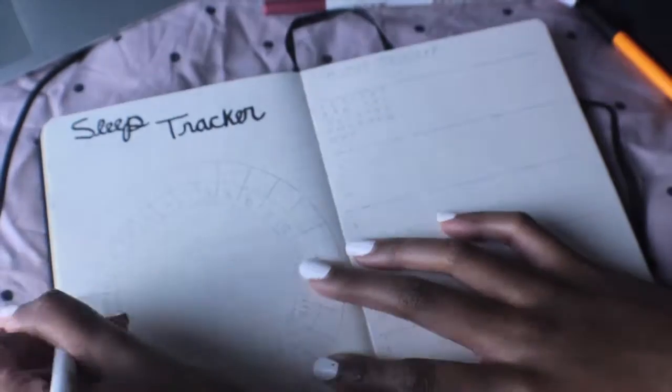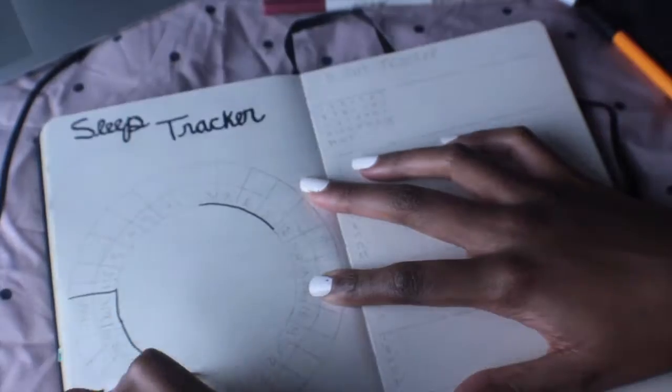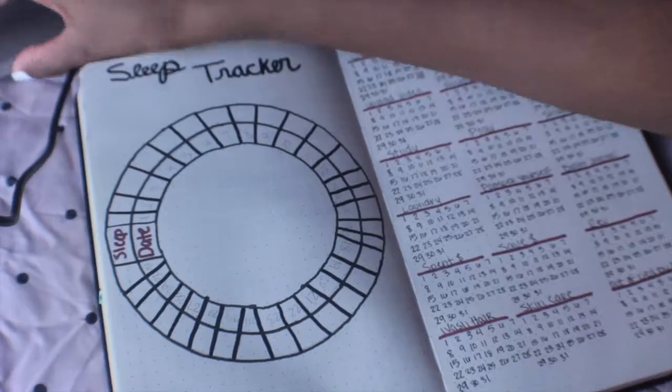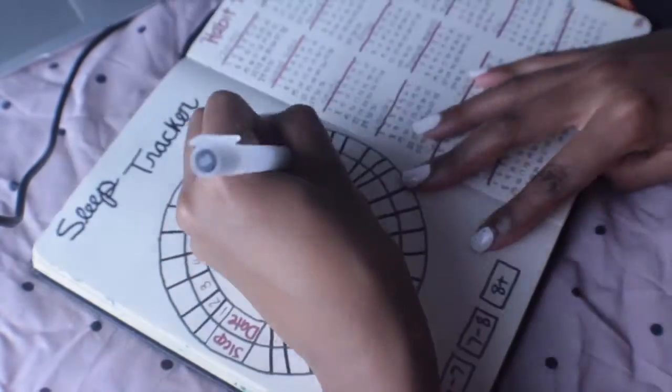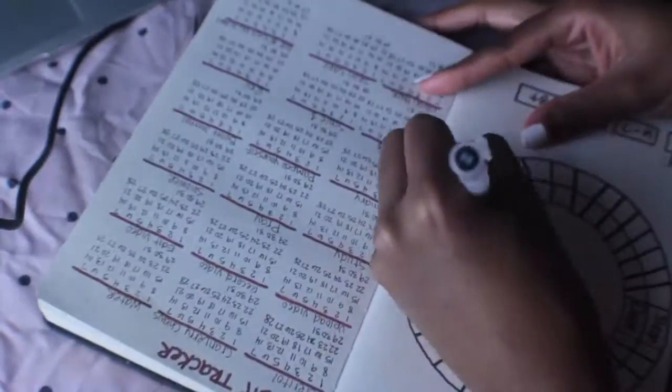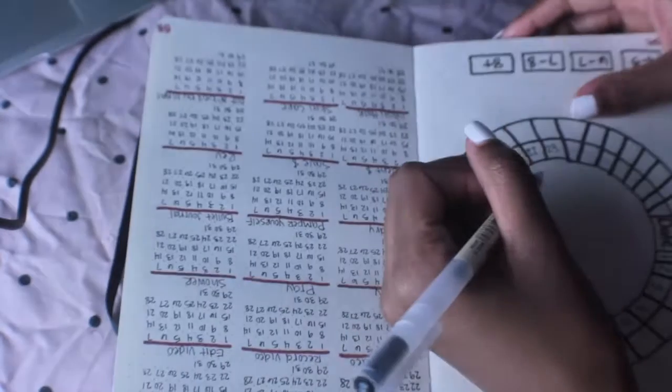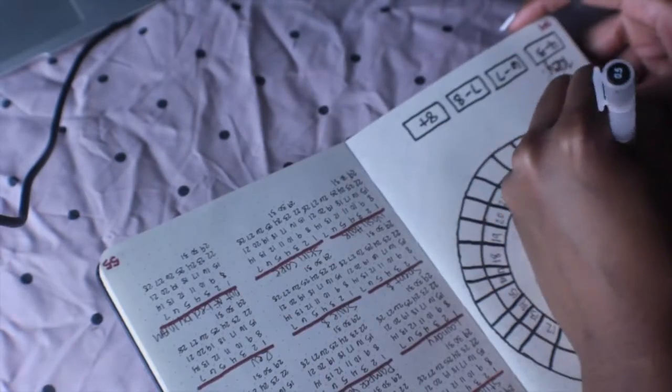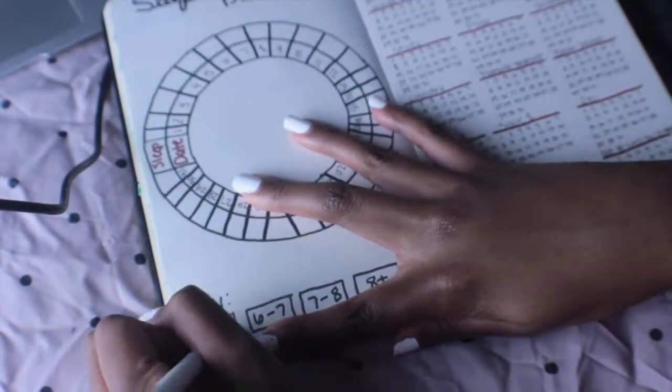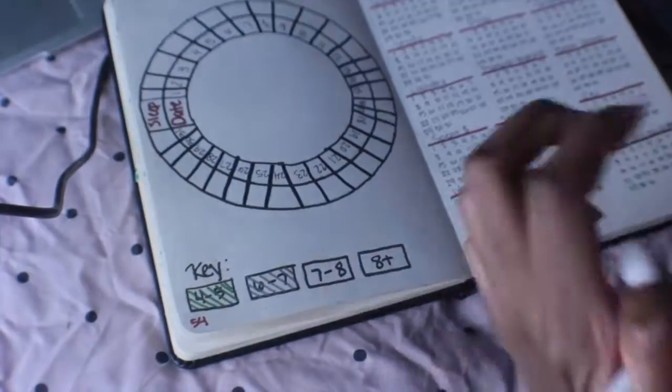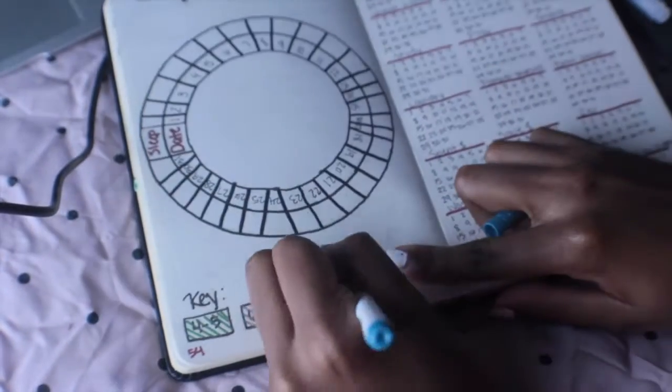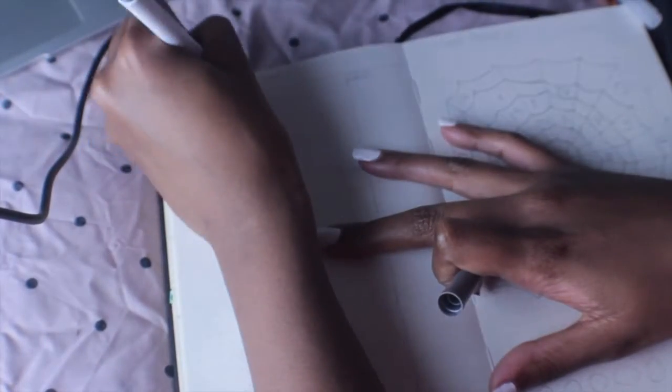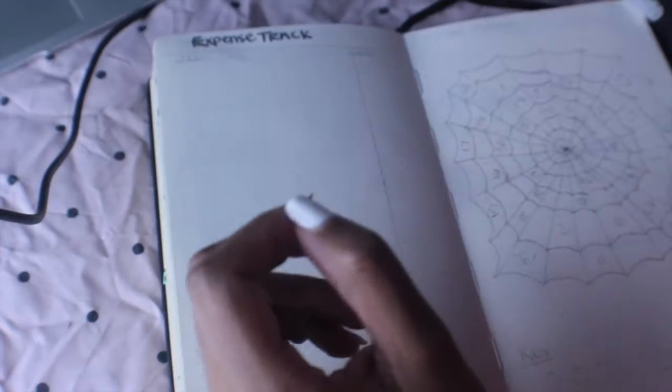There's my sleep tracker. I'm doing something different - I saw this on Pinterest. It's a circle type of design with the dates, all 31 days, on the inside. I have a key down at the bottom, so if I got four to five hours of sleep that day, I would use a green marker and put those little lines.